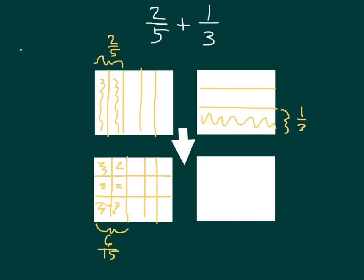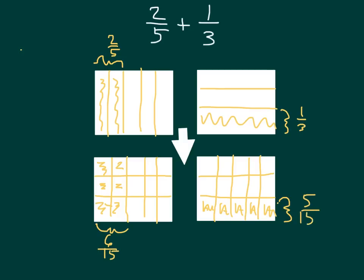When we're looking at 1 third here, we're going to get that equivalent fraction for 1 third. Initially, we had that thirds partitioned into thirds, and then we'll go ahead and partition into 5 parts vertically so that we have fifteenths. And we're looking at 1 third of that — that 1 third equals 1, 2, 3, 4, 5 fifteenths. So what we were working to solve — 2 fifths plus 1 third — we get like units of 6 fifteenths plus 5 fifteenths, which equals 11 fifteenths.